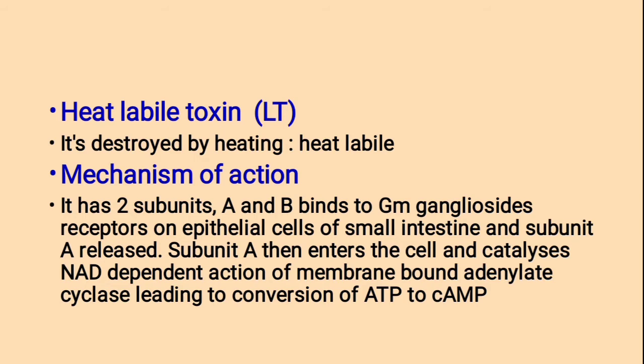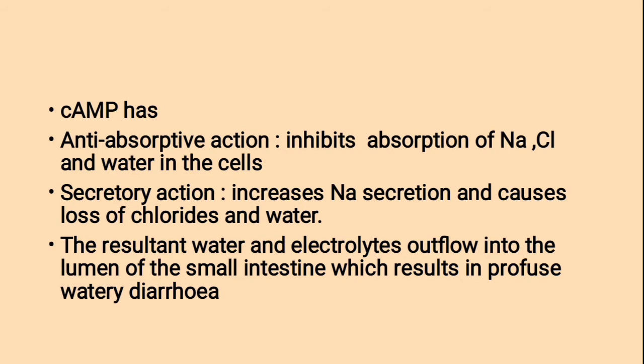Cyclic AMP has anti-absorptive action — it inhibits absorption of sodium, chlorine and water in the cells. It has secretory action: it increases sodium secretion and causes loss of chlorides and water. The resultant water and electrolyte outflow into the lumen of the small intestine results in profuse watery diarrhea. Profuse means overflowing.